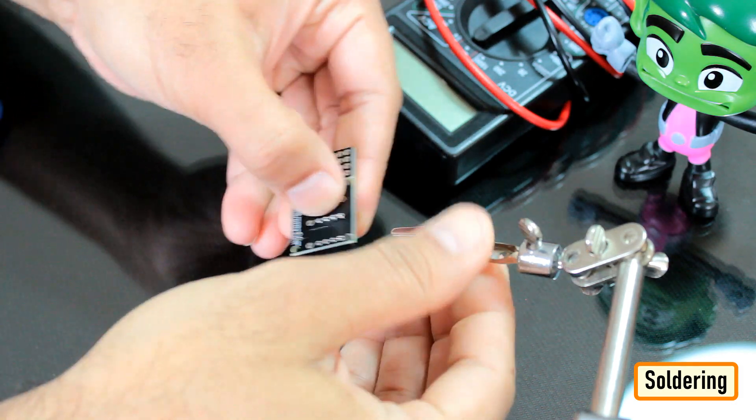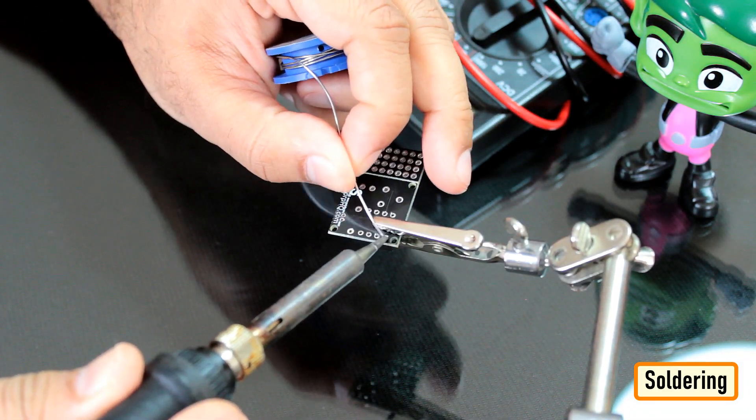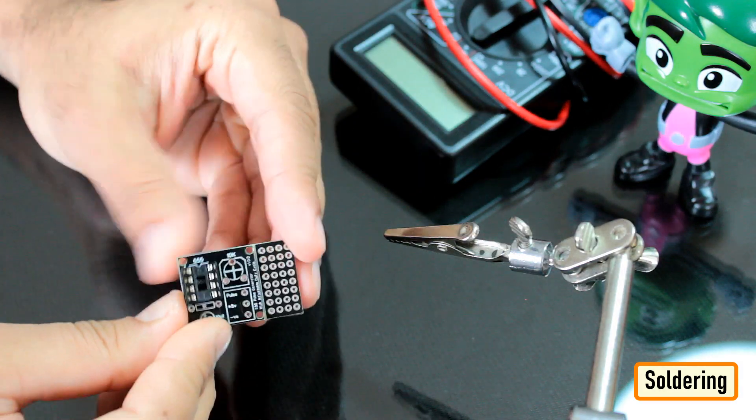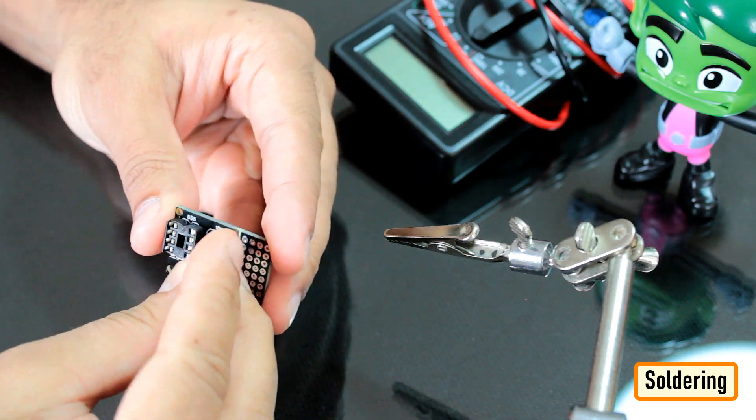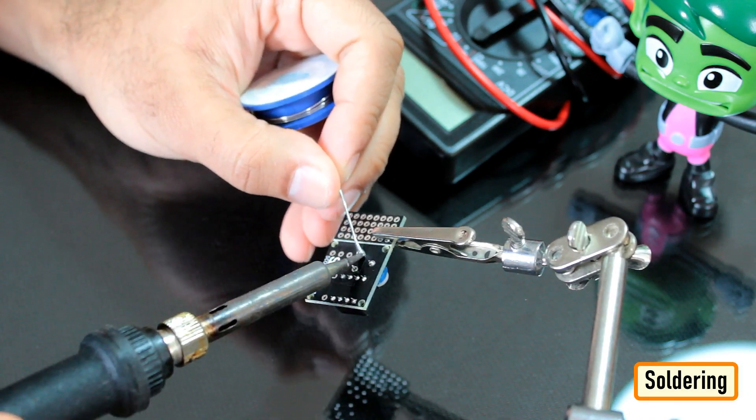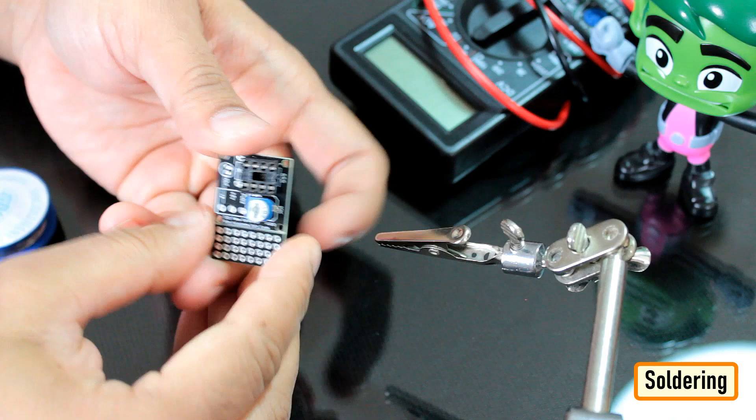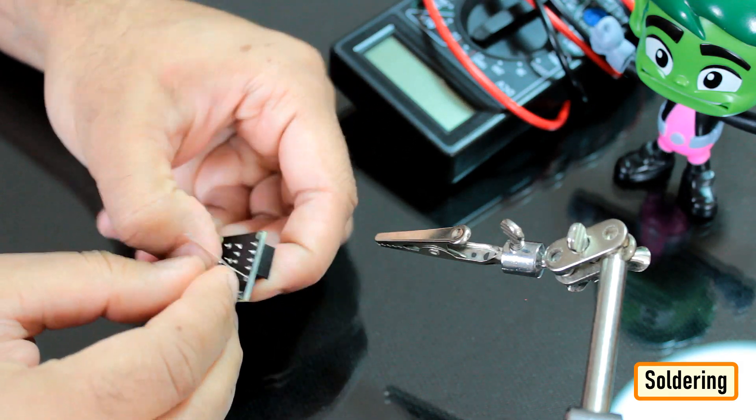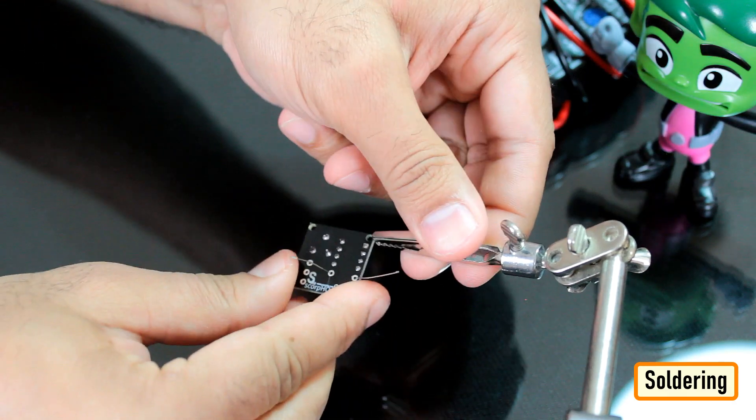Let's start by soldering the IC base to the board. Then let's solder the potentiometer to the board. After that, let's solder the R1 resistor to the board followed by the C3 capacitor to the circuit plate.